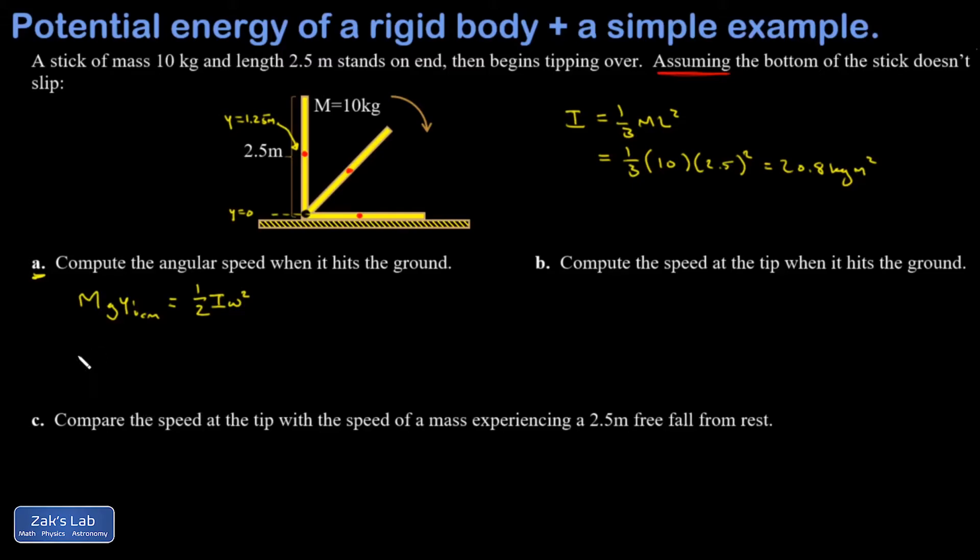Okay, so back to part A. I'm trying to solve for omega, and I suppose I'll write it symbolically. I'm going to multiply both sides by 2, divide by I, and square root the result. So let's get that done. I have 2mg, initial Y coordinate of the center of mass, all divided by I. And then square root it, so let's plug it in.